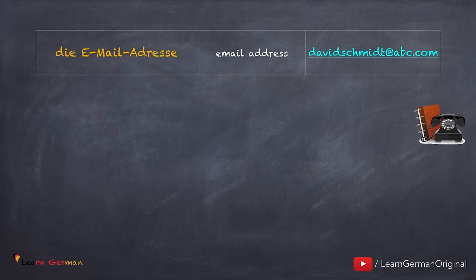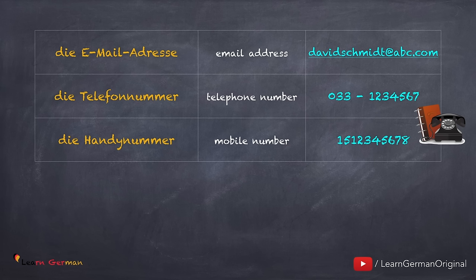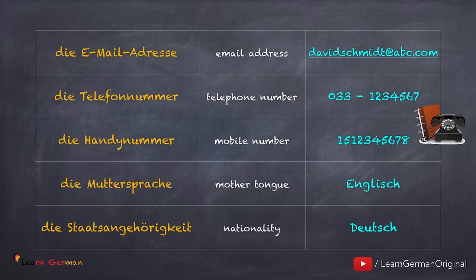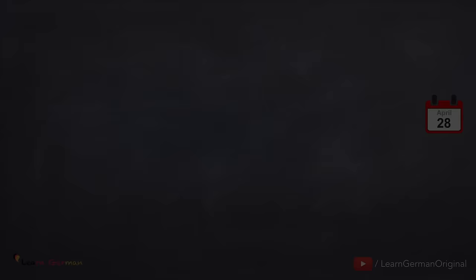Here are the next set of terms. The email address, for example david.schmidt@abc.com. You could also be asked for the Telefonnummer or die Handynummer — phone number or mobile number. Die Muttersprache — here you mention your mother tongue, for example Deutsch or Englisch. Die Staatsangehörigkeit — nationality — for example Deutsch or Französisch.